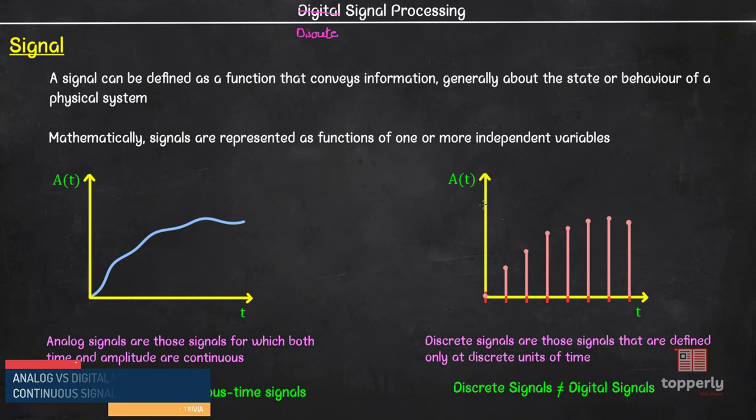So far we learned what is a signal, how signals are represented and how signals are classified into analog and discrete signals. Now let's learn what is signal processing.